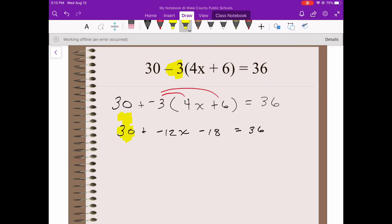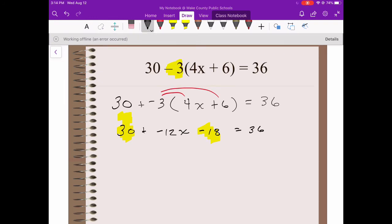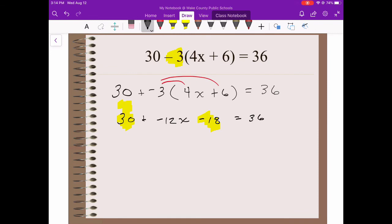Now I'm looking to combine like terms. Both that 30 and this negative 18 are like terms, so I can add those two things together. 30 minus 18 or 30 plus a negative 18, same thing. Either way, it's going to give me 12. So I've got negative 12x plus 12 equals 36. Now I'm just going to go through my two steps of the equation here. Reverse order of operations, subtract 12 in order to unadd. Negative 12x, those cancel. 36 minus 12 is 24.